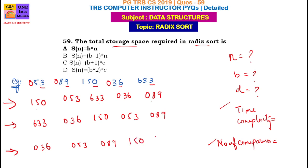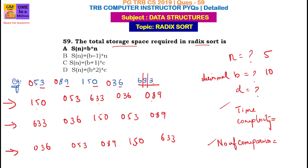Now, space is n — n is the number of values. b is the base, which is decimal, meaning digits 0 to 9, so there are 10 numbers. d is the number of digits — there are 3 digits. So d means the number of comparison levels. D equals 3.